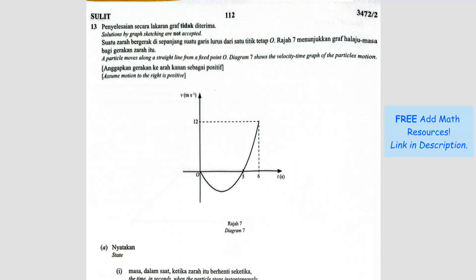Question number 13. A particle moves along a straight line from a fixed point O. Diagram 7 shows the velocity-time graph of the particle's motion. Assume motion to the right is positive. This is a velocity-time graph. I want you to try to understand the graph before you start answering the question — what does the graph tell you?